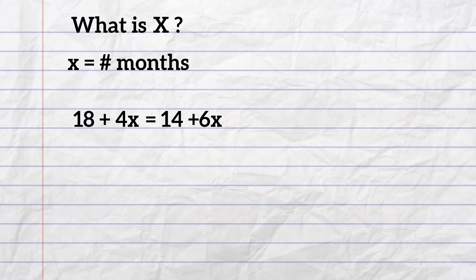So it will be 18 plus 4x, and that needs to be set equal to 14 plus 6x, because it is $14 to join the reading club and $6 a month.